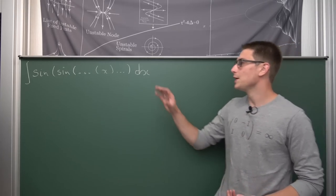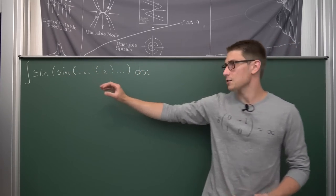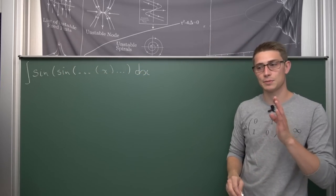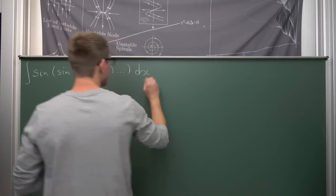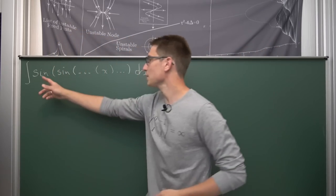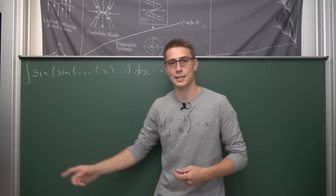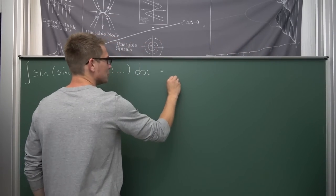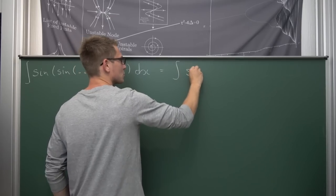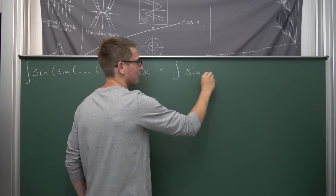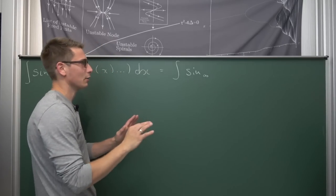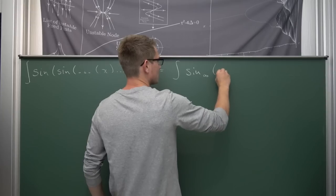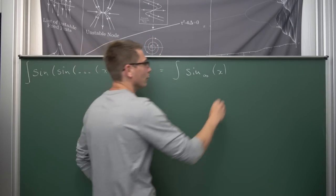The main procedure for evaluating something like this is to look at the function on the inside first. Let us adopt some different notation to make things easier. Since we are infinitely nesting sines — an infinite composition of functions — we are going to denote such compositions with sine and a little infinity subscript. So this is the integral of sine-infinity of x dx.